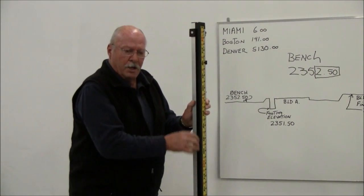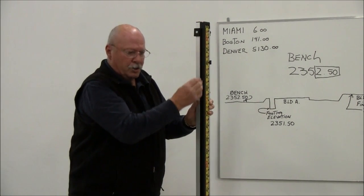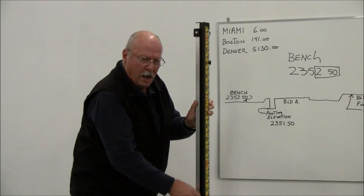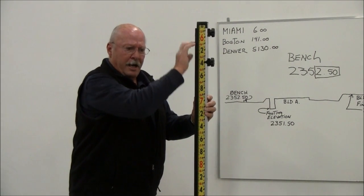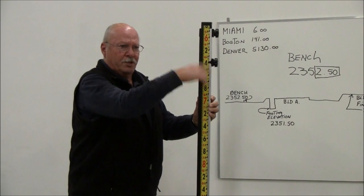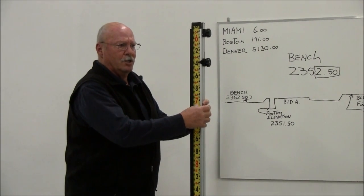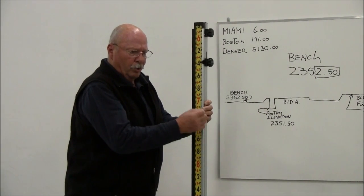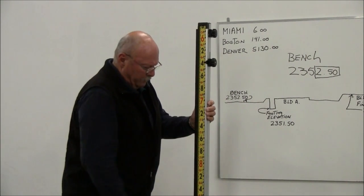The other thing about this grade rod is that on the side of it, this particular rod is used with a laser. There's a rail on the side of this rod that allows you to set your detector in there and slide the detector the full 10-foot travel of the rod without having to continually loosen the clamp, tighten the clamp, run it up and down on the rod.